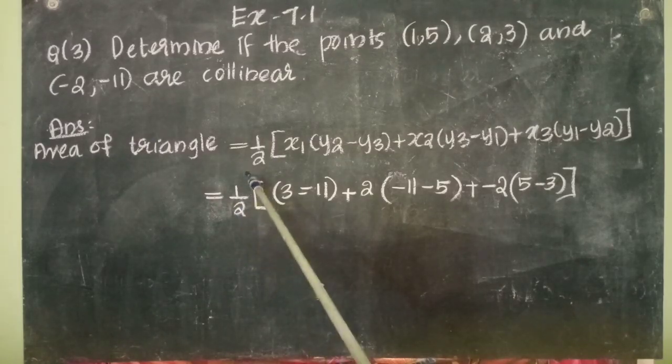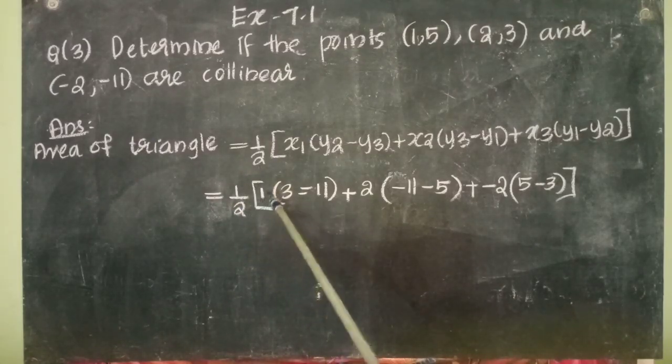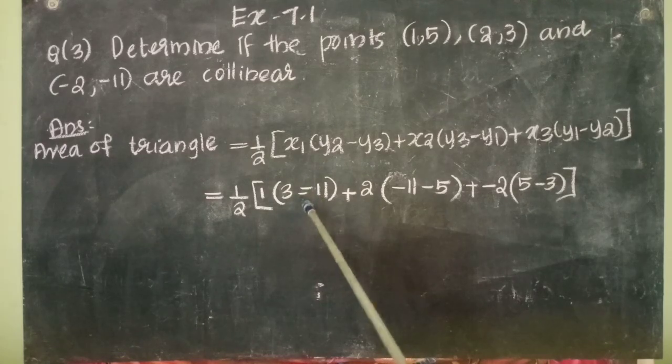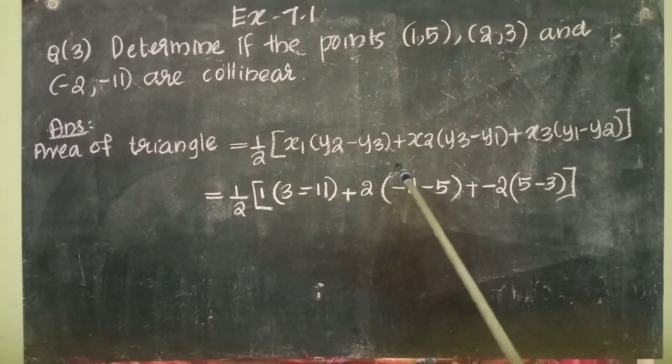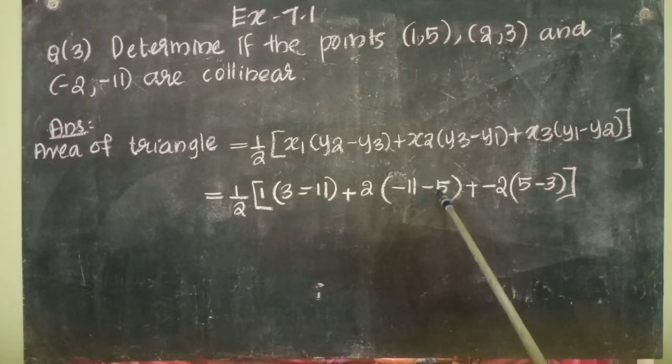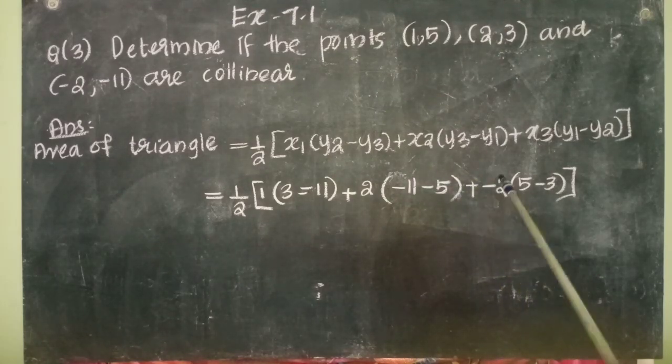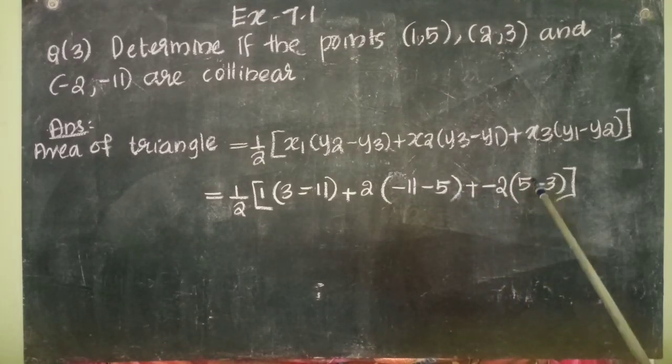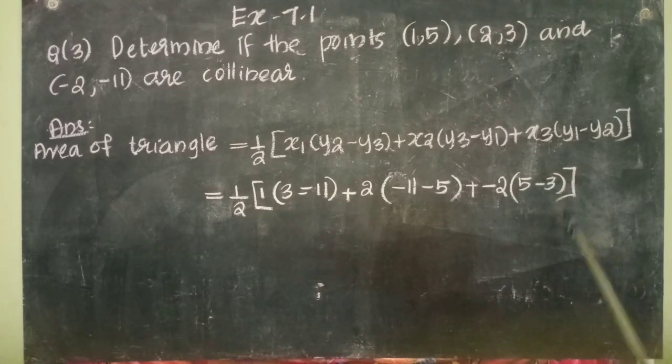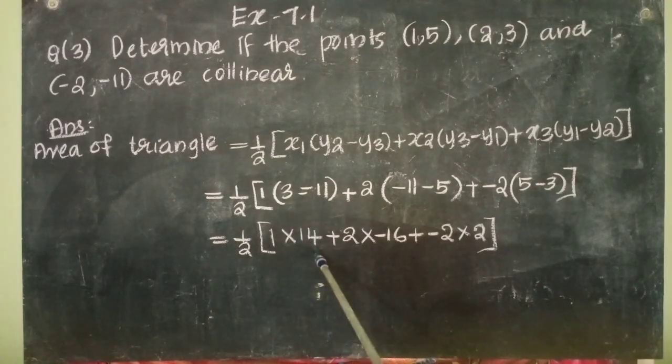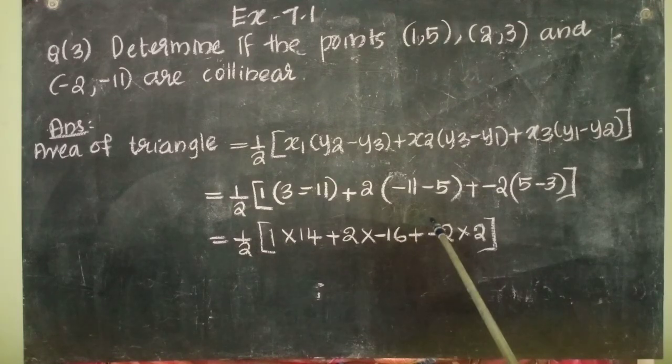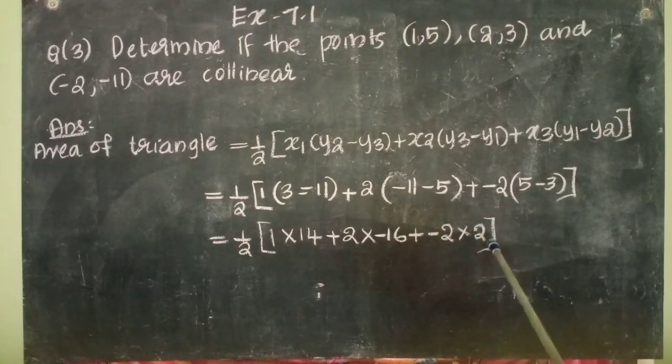That is equal to half into 1 into (3 minus (-11)) plus 2 into (-11 minus 5) plus (-2) into (5 minus 3). That is equal to half into 1 into 14 plus 2 into (-16) plus (-2) into 2.